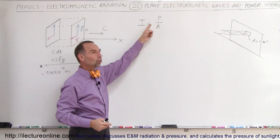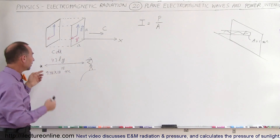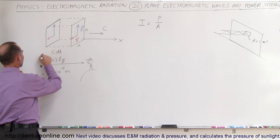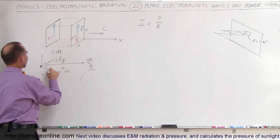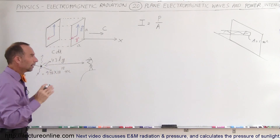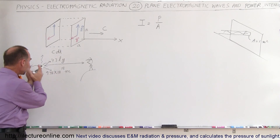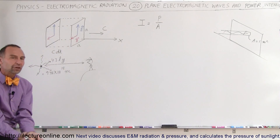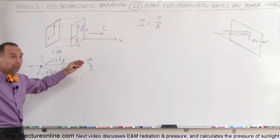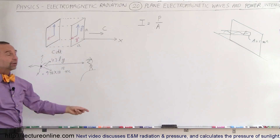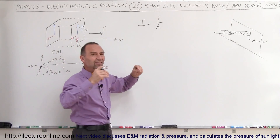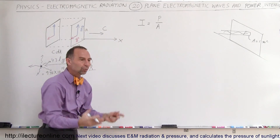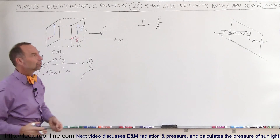When we take the power of the source — here's a source emanating energy in all directions — we take the power produced by that object and divide it by the surface area of the sphere over which it spreads. The farther it spreads, the larger that surface area, so the larger the denominator. In other words, the intensity drops off as a function of the surface area of the radiation wave as it spreads out into space.